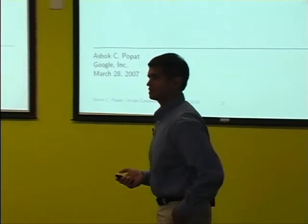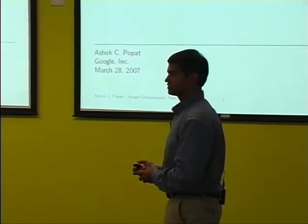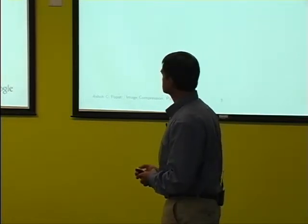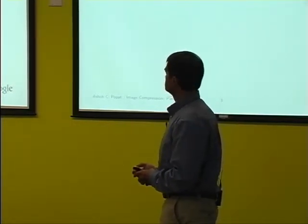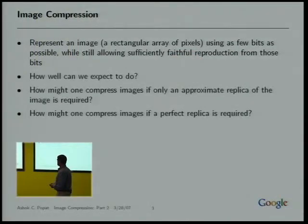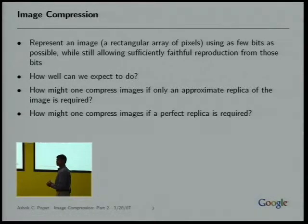Welcome everybody to the second half of my image compression talk. Reviewing the basic problem: we'd like to represent an image using as few bits as possible, but in a way that doesn't give up too much coding quality. Some questions we've asked and will continue to ask are: how well can we expect to do in principle or in theory? How might one compress images if we're willing to accept some loss? And what should we do if we want an exact bit-for-bit identical replica of the original?